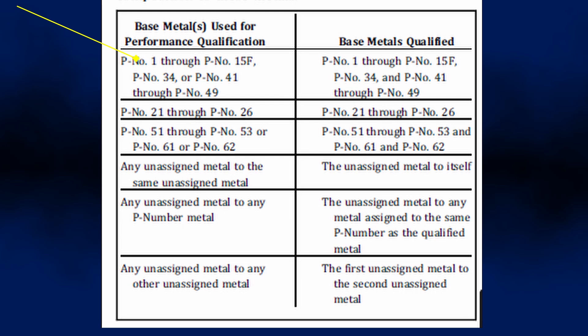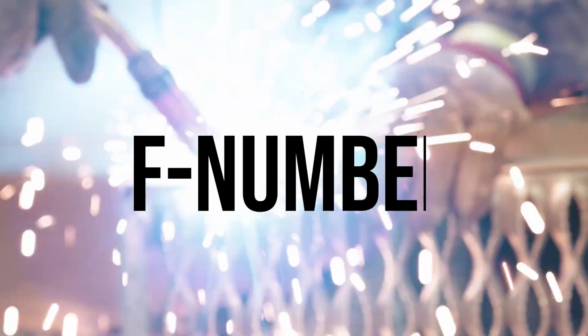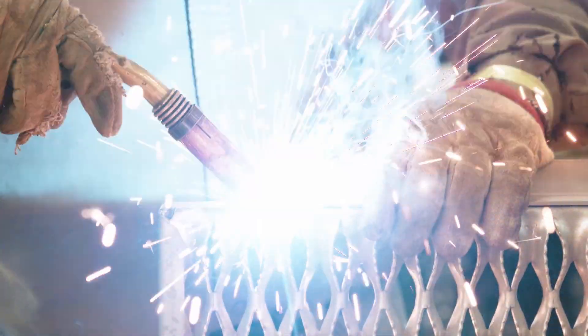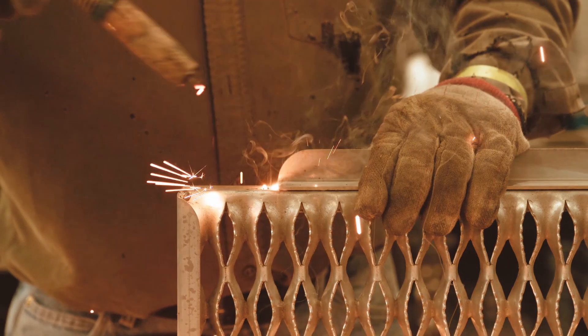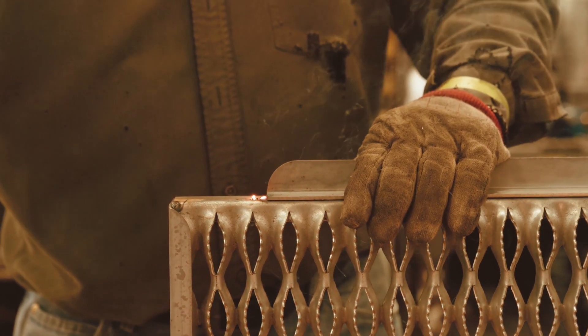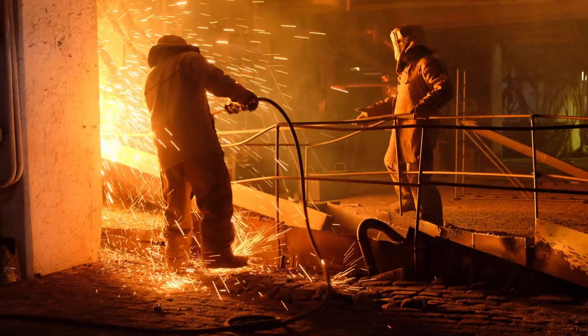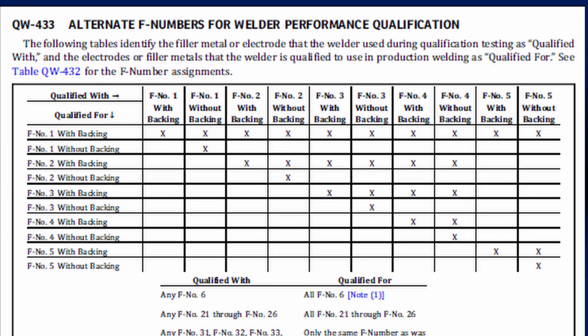For F numbers, similar to qualifying procedures, a change in F number will require re-qualification of the welder, except as permitted in Table QW-433. For F1 through F5, if you are qualified with F4 filler metals — which are classified for carbon steel and stainless steel electrodes for SMAW and low alloy steel covered arc welding electrodes — then you are now qualified for F3 all the way down to F1.